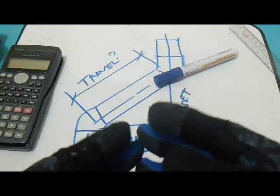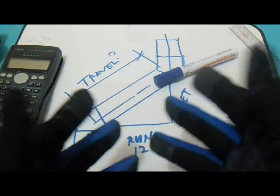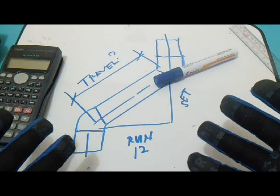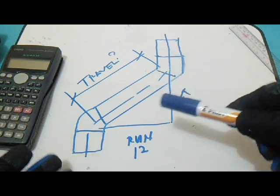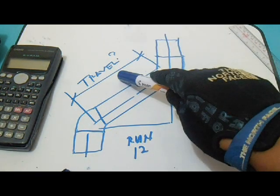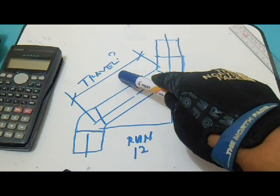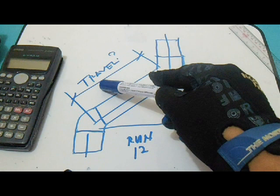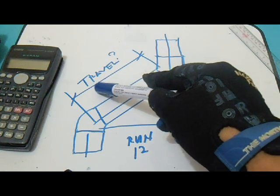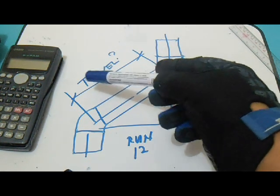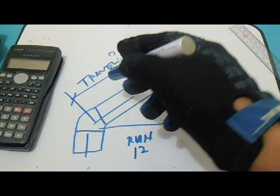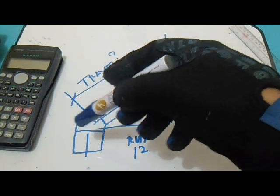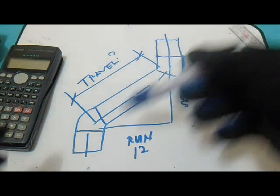Hello guys, welcome to Piping Welding and NDT channel. So here we go again, we have a run set and travel, and let's find this travel using 45 degrees. We will use the formula 1.414.